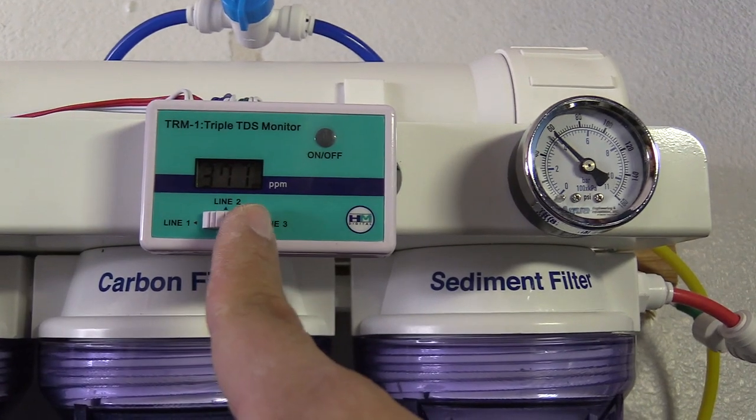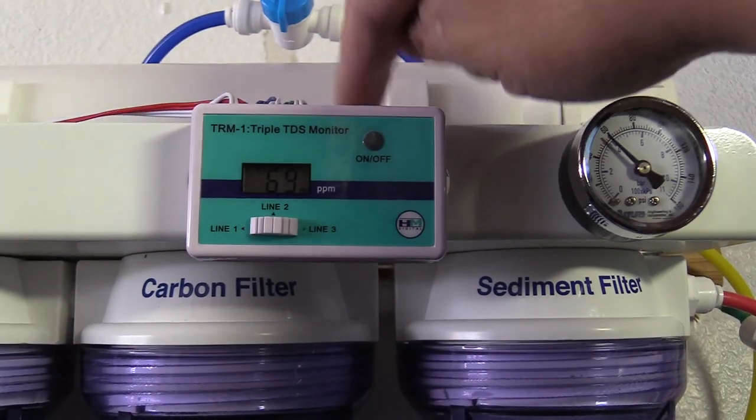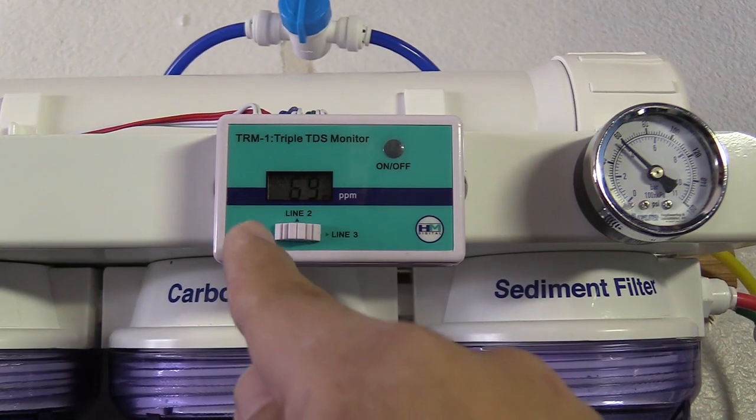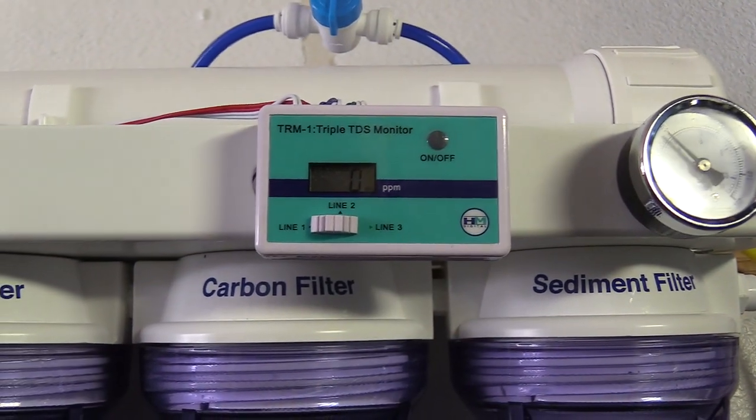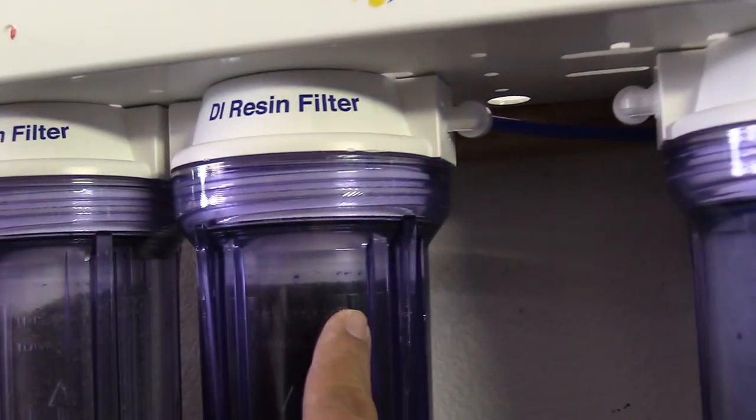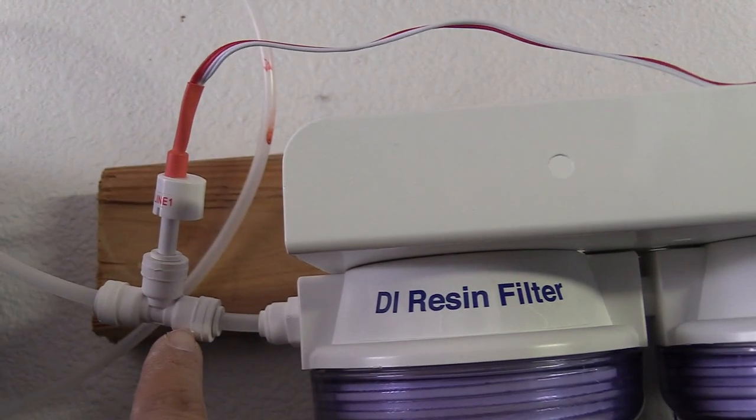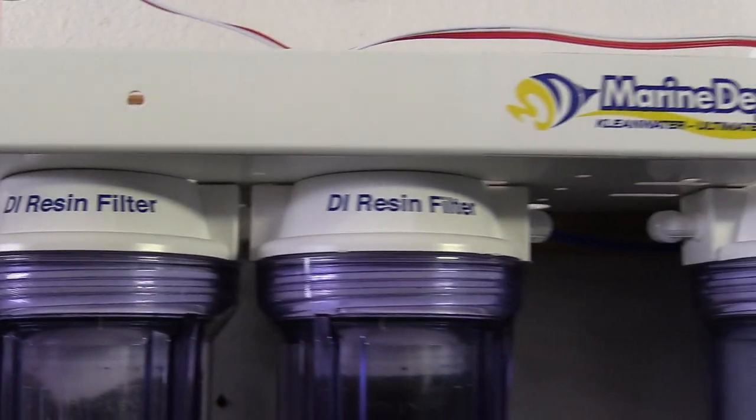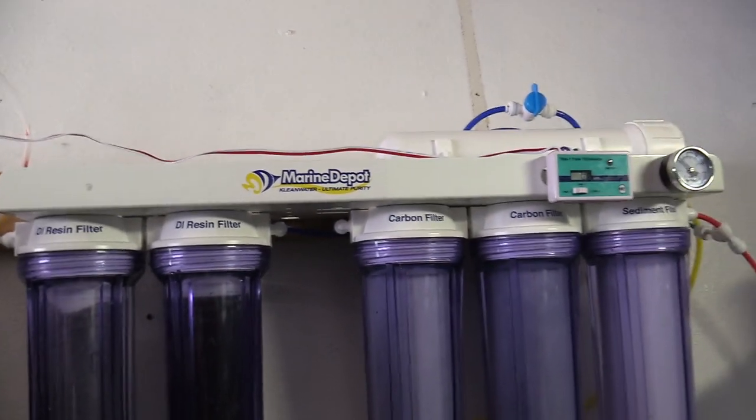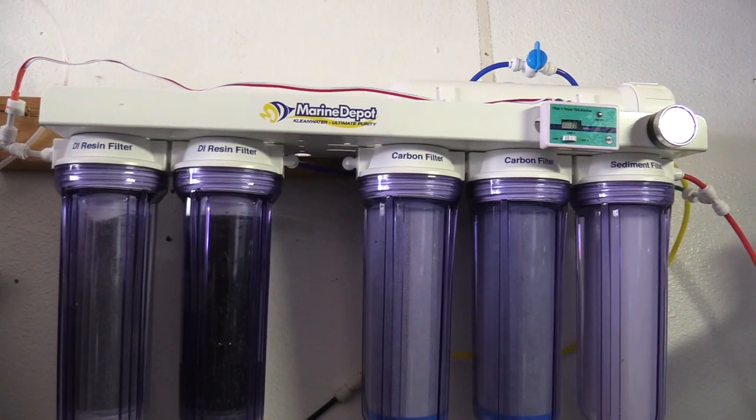But I'm curious, what RODI system do you guys use at your house? How do you guys go get your water? Do you guys go get your water from the LFS and just drive it home to your fish tank? Do you guys have your salt already mixed by the LFS? Or do you guys do it like me and just make everything at your house whenever you're ready and the convenience of your home?